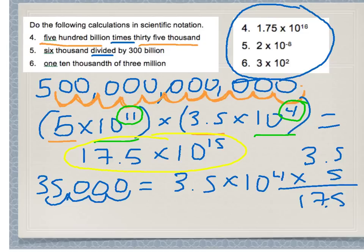Think to yourself — is 17.5 times 10 to the 15th actually in scientific notation? It is not. We need to move that decimal point over one place, making the front number smaller and the overall number larger. So the correct answer is 1.75 times 10 to the 16th. That's the answer listed there. In the end, you have to convert back into proper scientific notation to get those right answers.